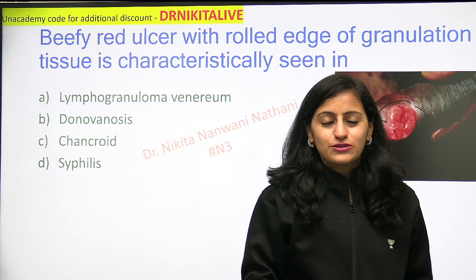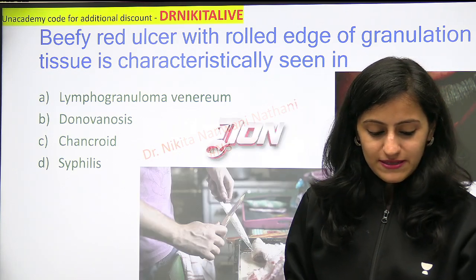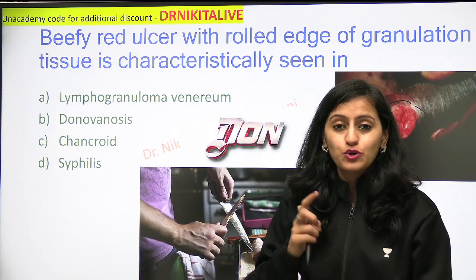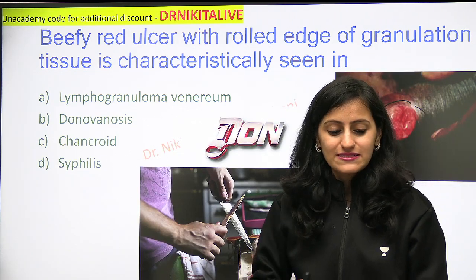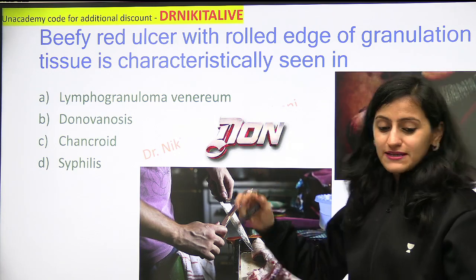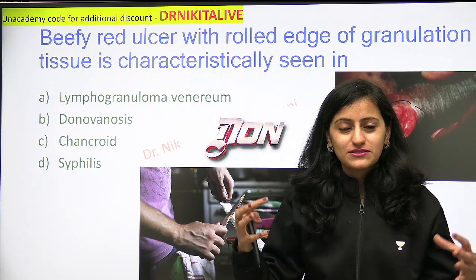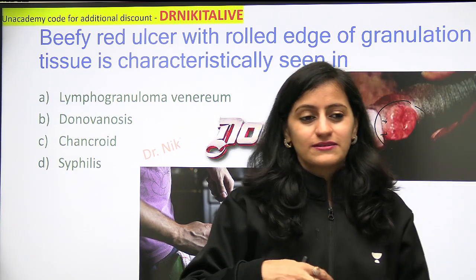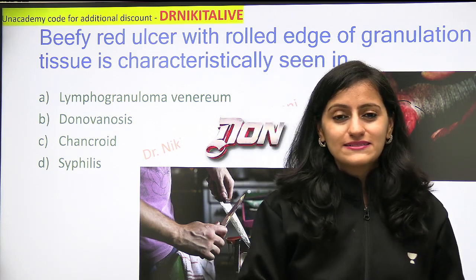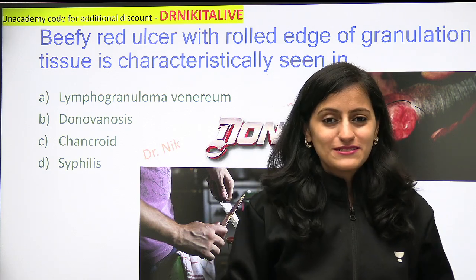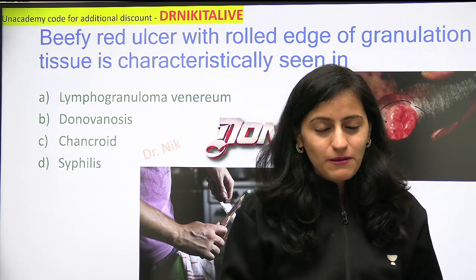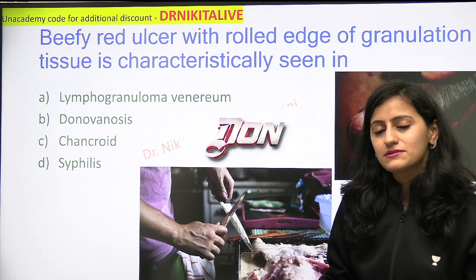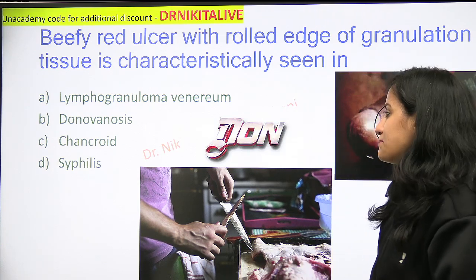The mnemonic to remember is: think of 'dawn' — Donovanosis is dawn. Remember that dawns are the ones involved in all the violence, the 'marapiti,' the 'khun karaba.'